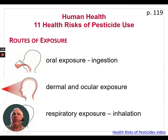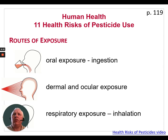We need to consider the routes of exposure and protect ourselves accordingly. Oral exposure is the ingestion of a pesticide. Dermal or ocular exposure is when it's on your skin or in your eyes — and think about your eyes: they're moist, there's no barrier there, so if you get pesticide in your eyes it's instantly into your system. Respiratory exposure, of course, is inhalation through your lungs.